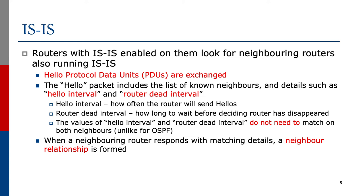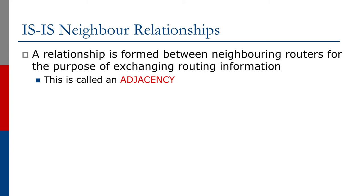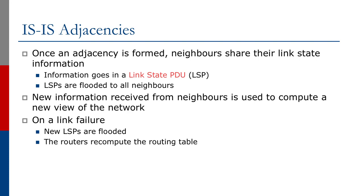When a neighboring router responds with matching details, a neighbor relationship is formed. A relationship is formed between neighboring routers for the purpose of exchanging routing information, and this is what we call an adjacency. Once an adjacency is formed, neighbors will share the link state information. Information goes in a link state PDU, or more commonly called an LSP. LSPs are flooded to all neighbors.